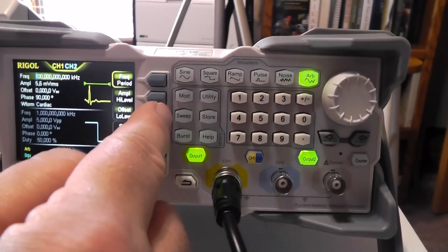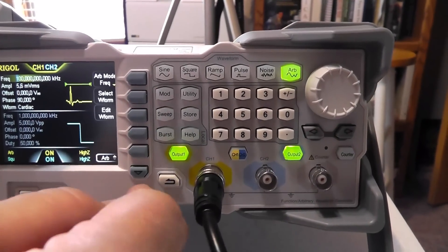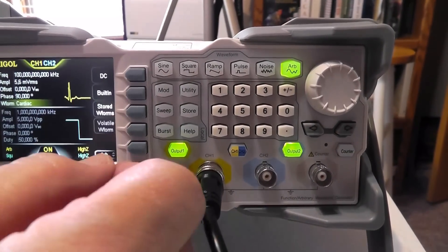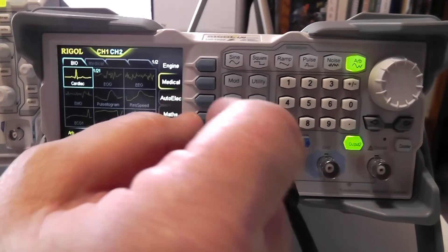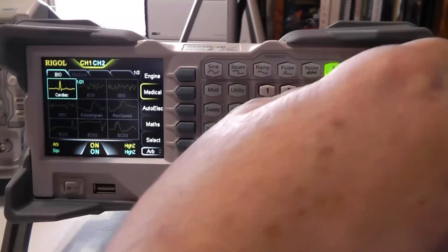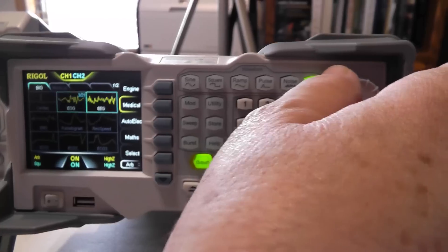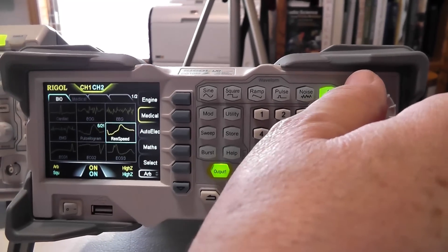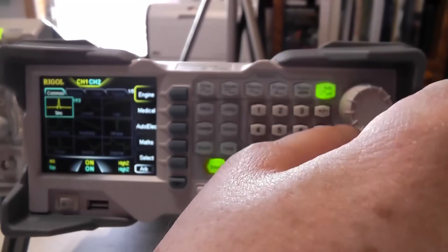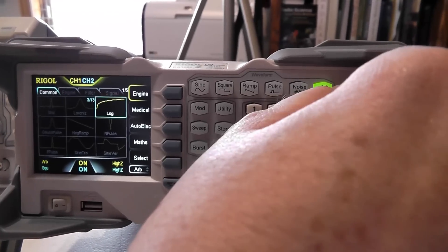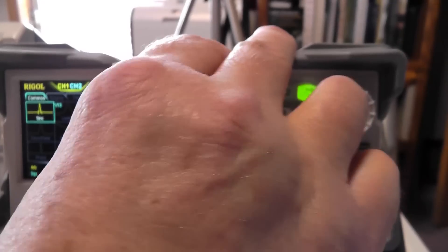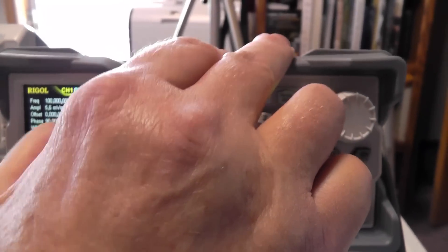And let's see, we'll go to the arbitrary waveforms here. We'll select a waveform. And look at the built-in ones. There's some cardiac ones. If you're designing equipment that has to deal with these things, it'll give you these waveforms. It says engine, but these are pulses that you'll find in odd situations. Okay. And you can select one of these and that's what you'll get.